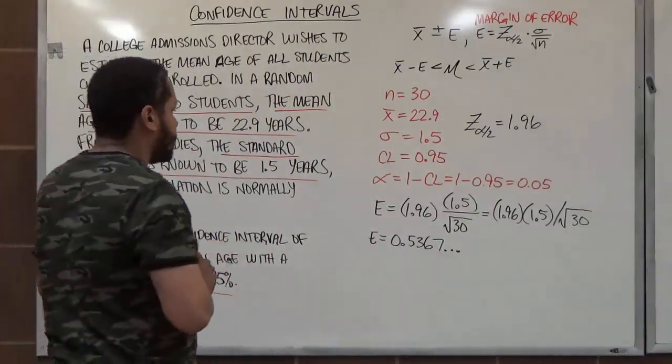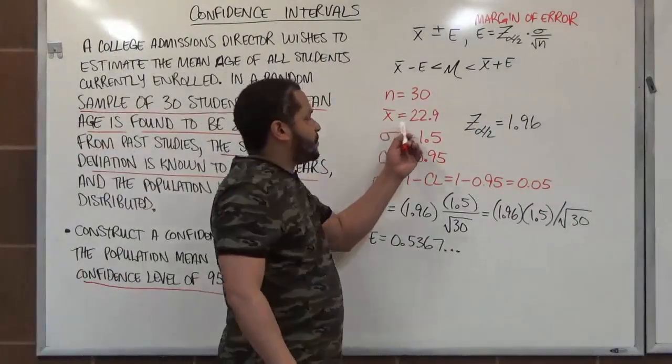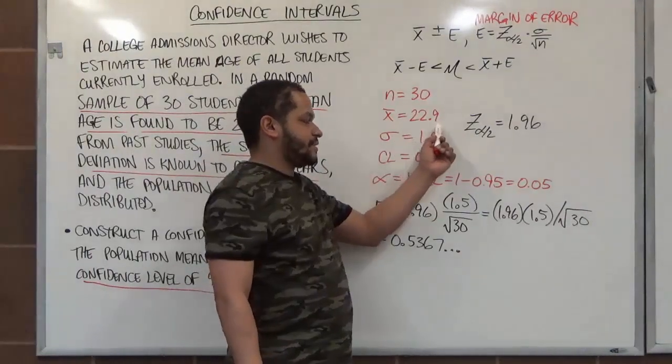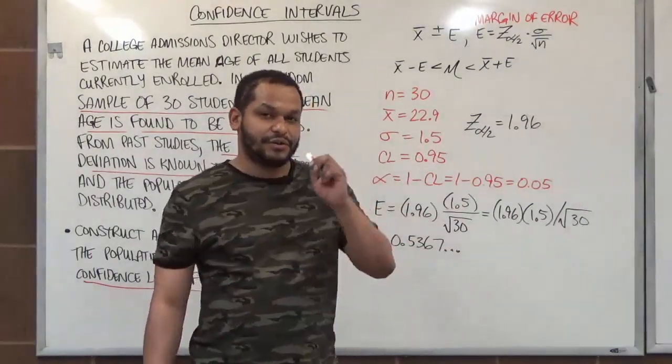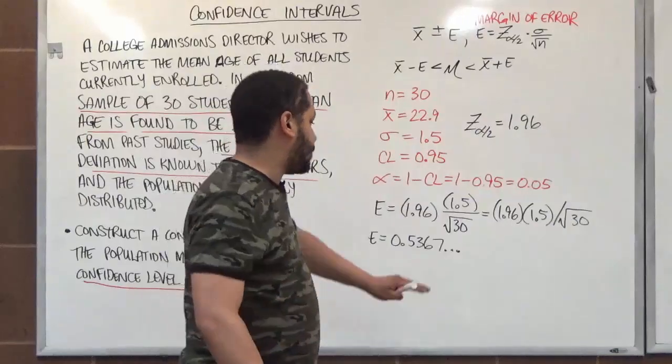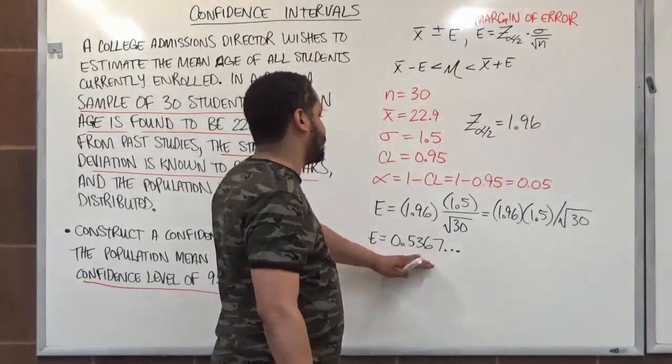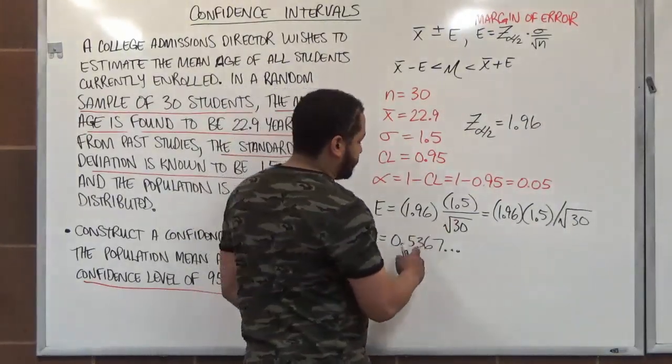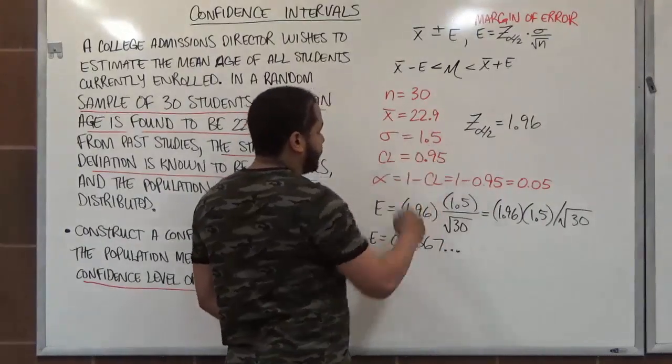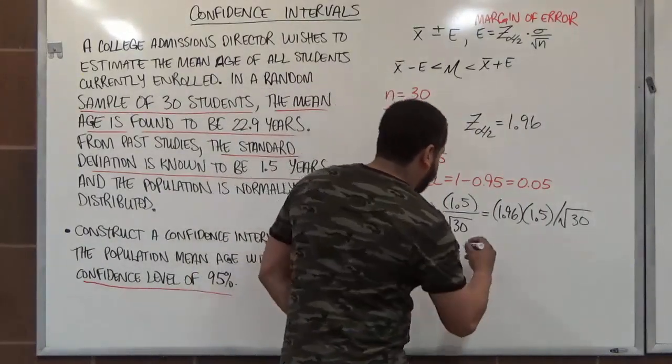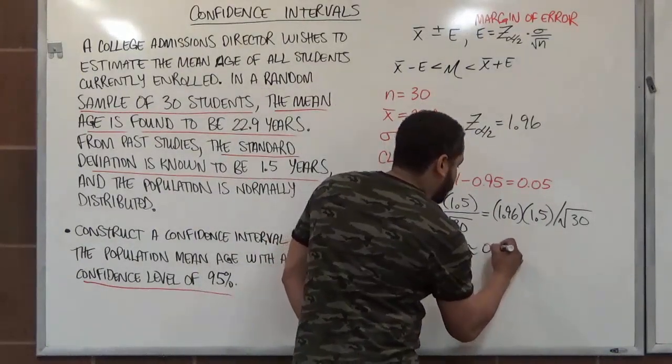But more importantly, where do we round the margin of error to? Well, if we look at our best point estimate here, we see that we have one decimal place. So our margin of error should go one extra position. Because the margin of error, like everything else including standard deviation, should always go one extra position to our average. So we're going to round this value to 0.54.